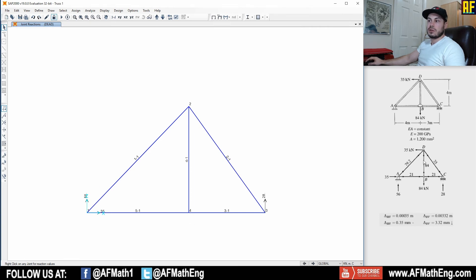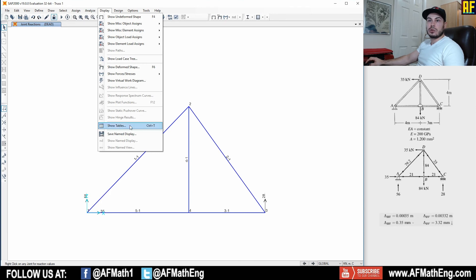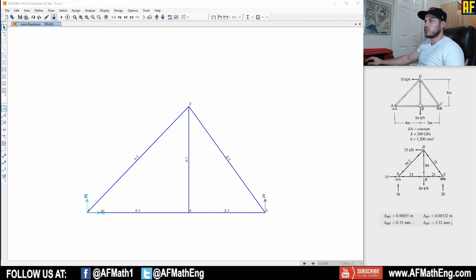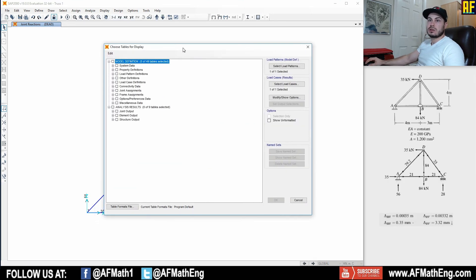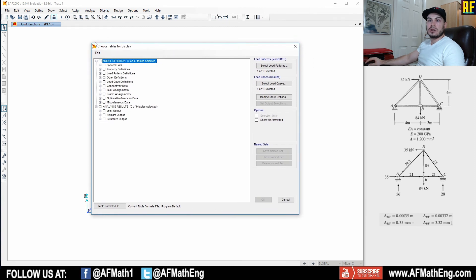So when we look at, for example, which member is which force in our table, we're going to know which one's which. So let's take a look at these forces in each member. And I'm going to show you how to do that. I'm also going to show you at the same time how to find that deflection. So go ahead, go to display and go to show tables. So you're going to go to show tables and you're going to see that this screen comes up. So we have choose tables for display.